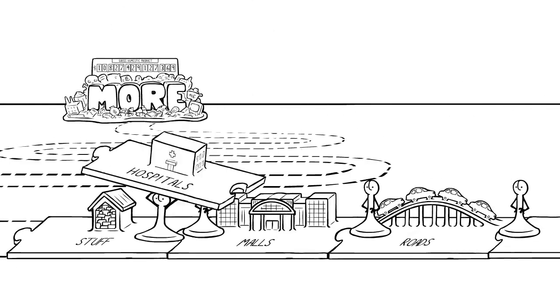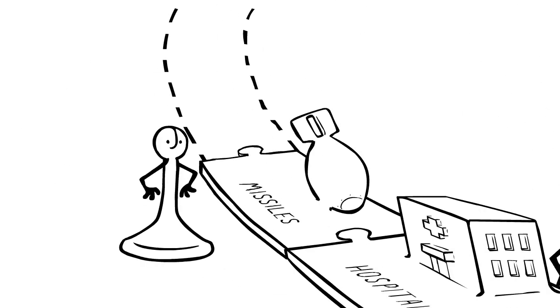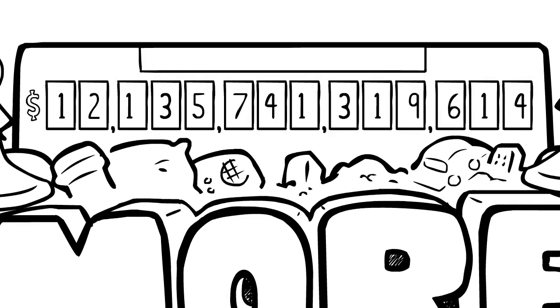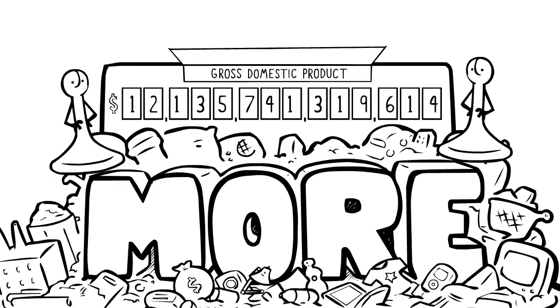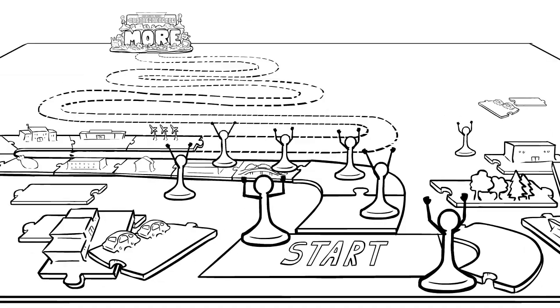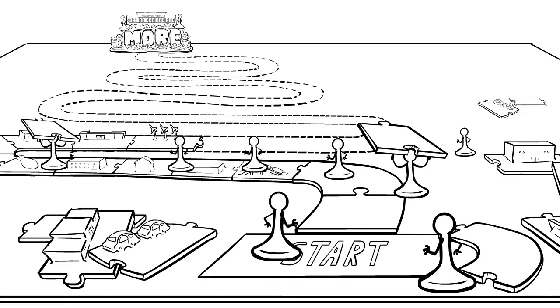So we take all the money spent on stuff that makes life better, and all the money spent on stuff that makes life worse, and we add it together into one big number called GDP. We're told that a bigger GDP means we're winning. So it's the number that thousands of rules and laws are designed to increase.